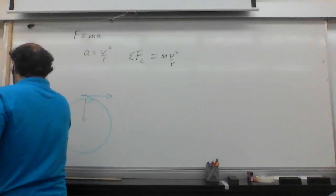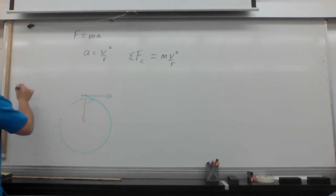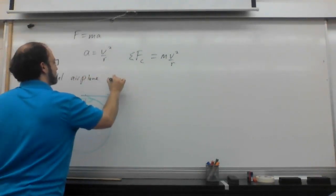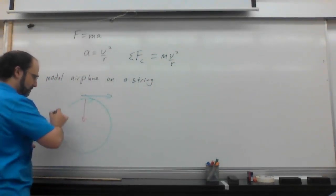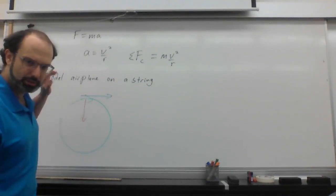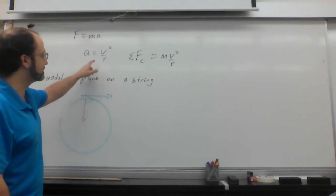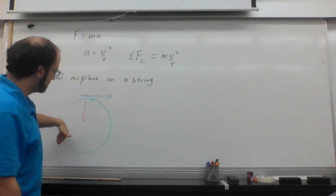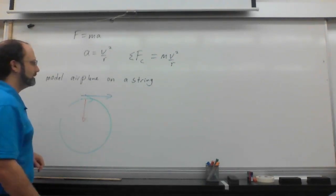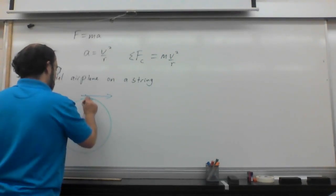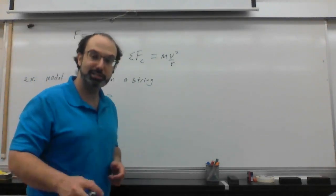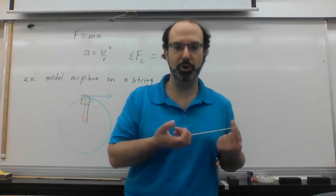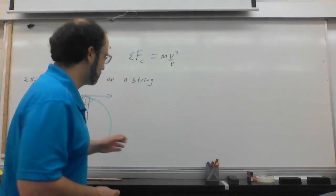Let's do some examples. Top down view — we have a circle. We're going to talk about a model airplane on a string, going in a circle just like this. The velocity is tangent to the circle, the acceleration points to the center, and the force centripetal follows the acceleration to the center. The string connected to that airplane is what's causing it to continue moving in a circle. If I remove the string, it will just go off in a straight tangent line. So we need that string for this to work.